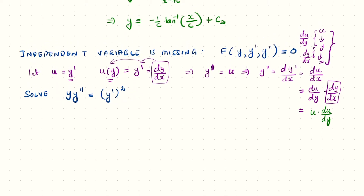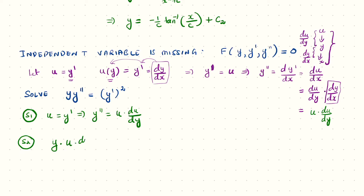Using this substitution: u equals y prime and y double prime equals u·(du/dy). Plugging into the equation y·y double prime equals (y prime) squared, we get y·u·(du/dy) equals u squared. Here u is treated as a function of y, so the variables are u (dependent) and y (independent). We can now apply the variable separable method.